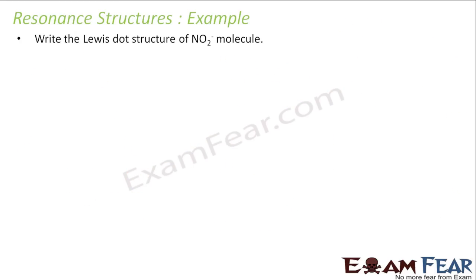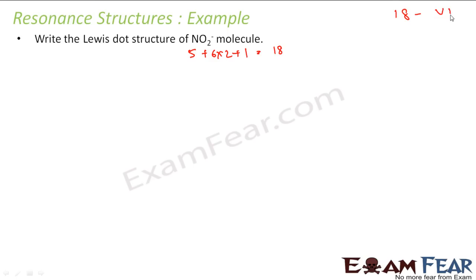Let us draw a structure of NO2 minus. Nitrogen has 5 electrons, oxygen has 6, so 6 into 2 because there are two oxygen atoms, plus one extra charge — that gives us 18 valence electrons to start. Let us draw the structure with nitrogen as the central atom and put some oxygen atoms here. Since we have used two bonds, 4 electrons are gone, and we are left with 14 electrons.